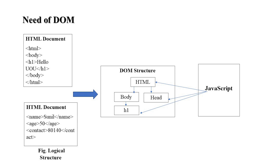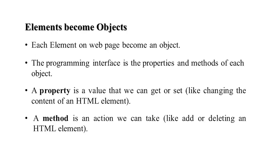If you look at the logical structure, we have an HTML document. The DOM arranges it in a tree-like structure where the root is HTML, with children like body, head, and h1. JavaScript can access this DOM structure, or it can access the HTML page through the Document Object Model. Each tag on the web page becomes an object.